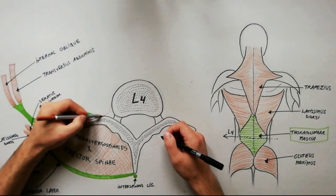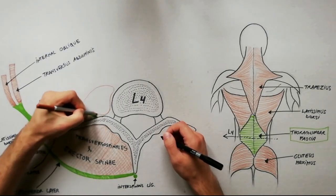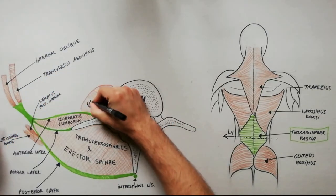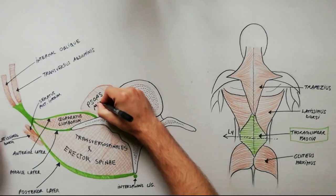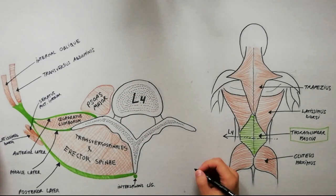The psoas major muscle is placed anterior to the medial part of the anterior layer of thoracolumbar fascia, being enclosed in its own muscular sheath.